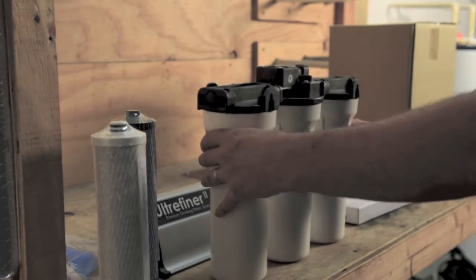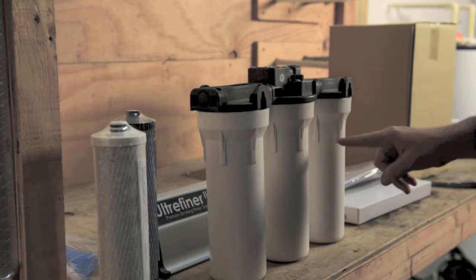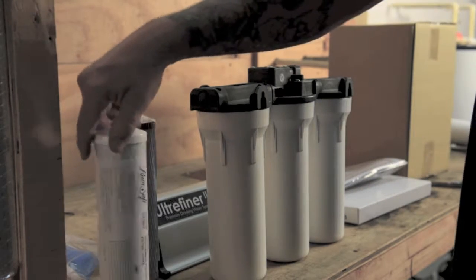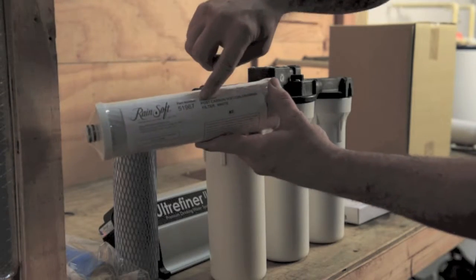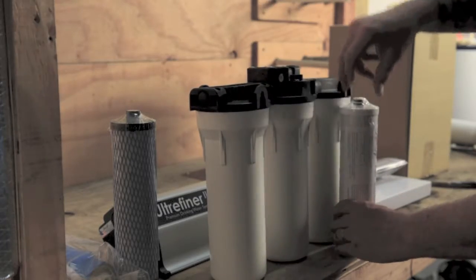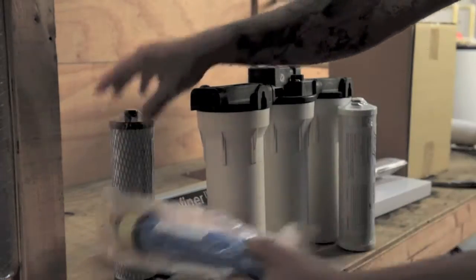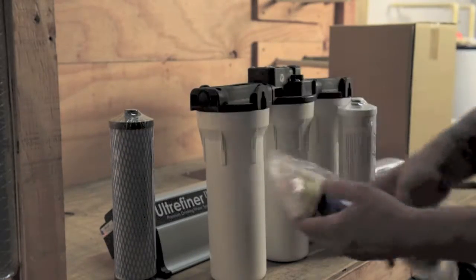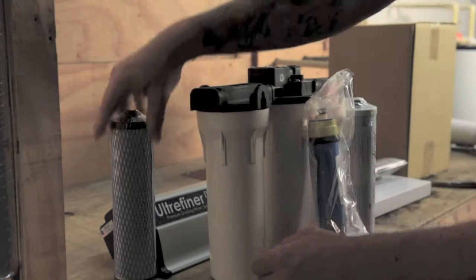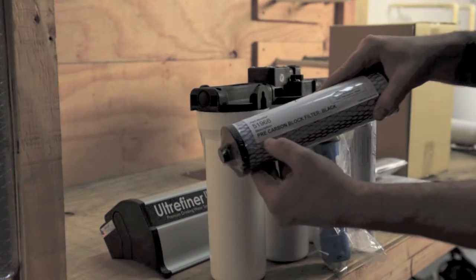The filters placed are the pre, the membrane, and the post. The post filter is white and it goes last. The membrane goes in the middle, and the pre-filter goes first.